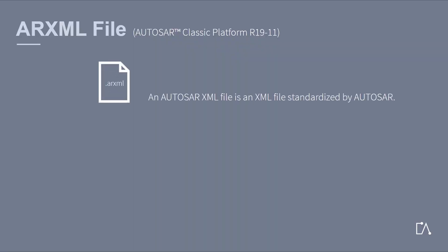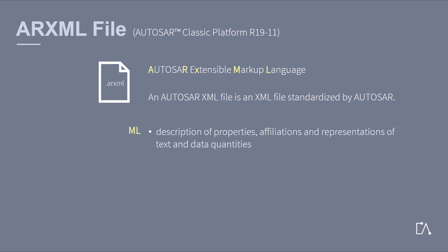An AUTOSAR XML file is an XML file standardized by AUTOSAR. Therefore AR XML stands for AUTOSAR Extensible Markup Language. A markup language describes properties, affiliations and representations of text and data quantities.